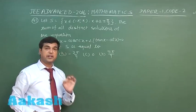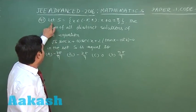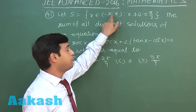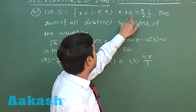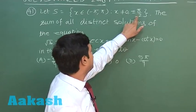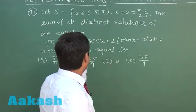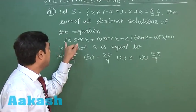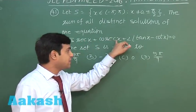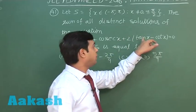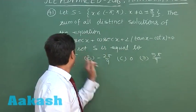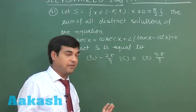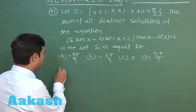Let's take question number 41. Let S = {x ∈ (−π, π) : x ≠ 0, x ≠ ±π/2}. The sum of all distinct solutions of the equation √3·sec(x) + cosec(x) + 2(tan(x) − cot(x)) = 0 in the set S is to be found. Let's solve this trigonometric equation.